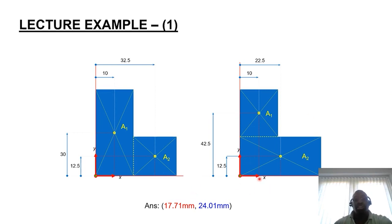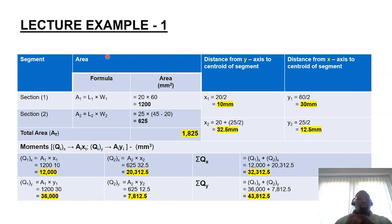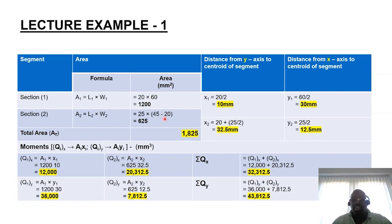These are the answers at the bottom — you can pause the recording and have a go before moving on. I'm going to use the first diagram to work out the global centroid position for the composite form. I would encourage you to use a table similar to what I've shown, as it helps present your work clearly and enables you to track errors when proofreading. Define the formulas and use sample calculations where appropriate.